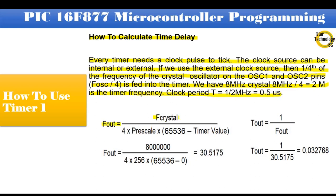FOUT equals F crystal divided by 4 multiplied by prescaler value multiplied by 65536 minus timer initial value. We are using 8 MHz crystal divided by 4 multiplied by prescaler value of 256 multiplied by 65536 minus initial value 0. The answer is 30.5175. TOUT equals 1 divided by FOUT, 1 divided by 30.5175 equals 0.032768. This is maximum delay we can generate with Timer 0.